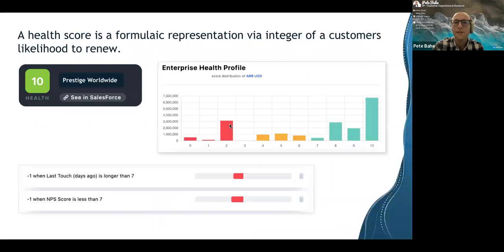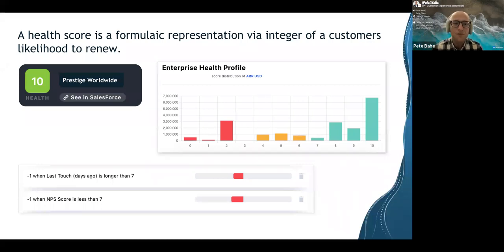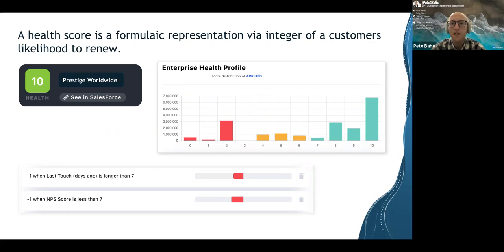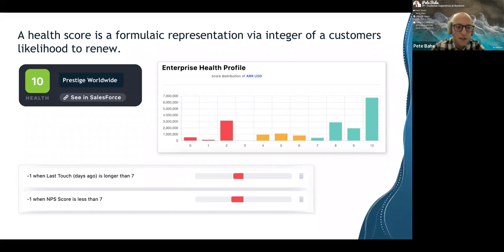A health score is, at its most fundamental level, a symbol that represents the underlying aggregate of all the different signals we have for a customer. A signal could be a number of different things. Think about if, as a CSM or account manager, you haven't reached out to one of your predefined accounts in a particular cadence, if you deviated from a playbook, if the customer gives bad feedback, or if a QBR didn't go well. All of these things can go into a health score — some qualitative, some more quantitative, like product usage or email cadence.